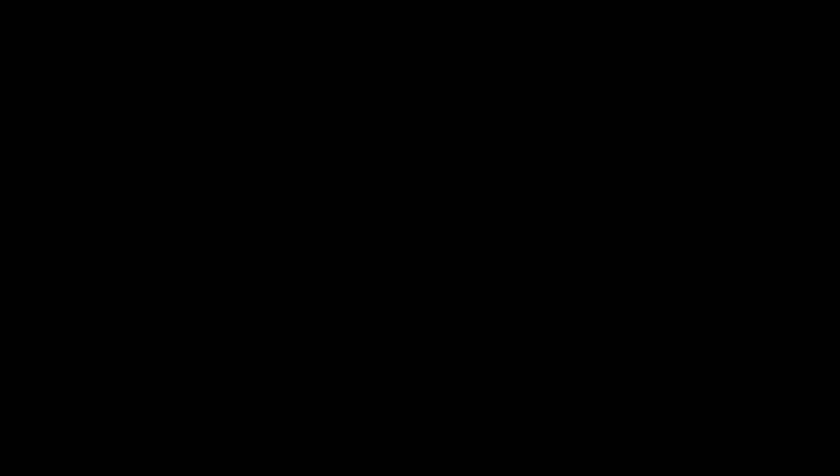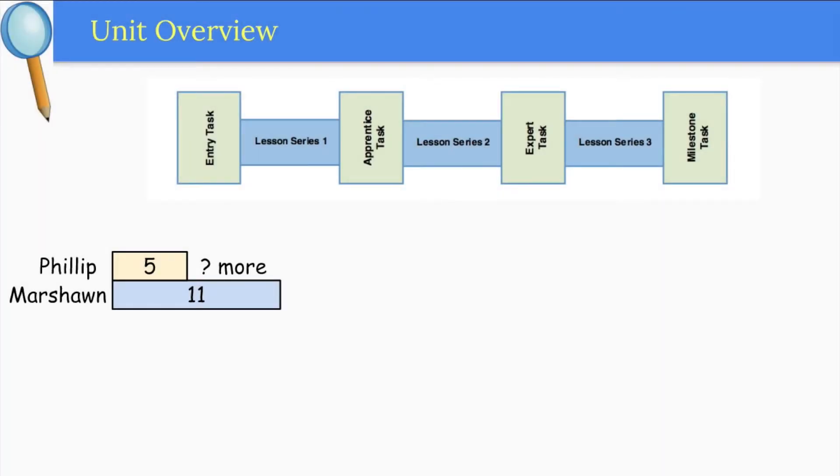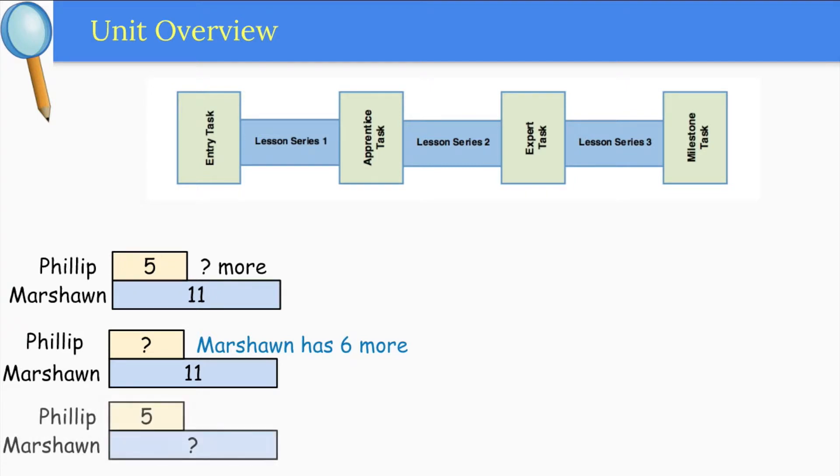Students start this unit with a word problem to introduce a comparison situation in a context where the difference is unknown. Lesson Series 1 explores bigger and smaller unknown comparison situations with various wording possibilities. Wording possibilities in compare problems can really point out the trouble with relying on keywords, as the same words will require different actions depending on how they are used.